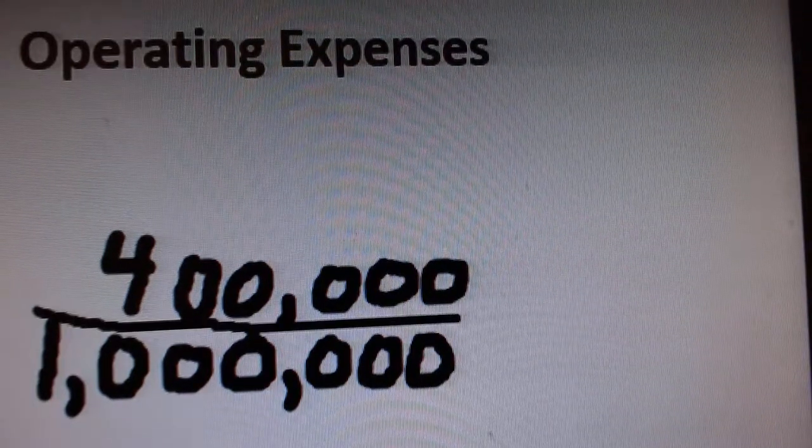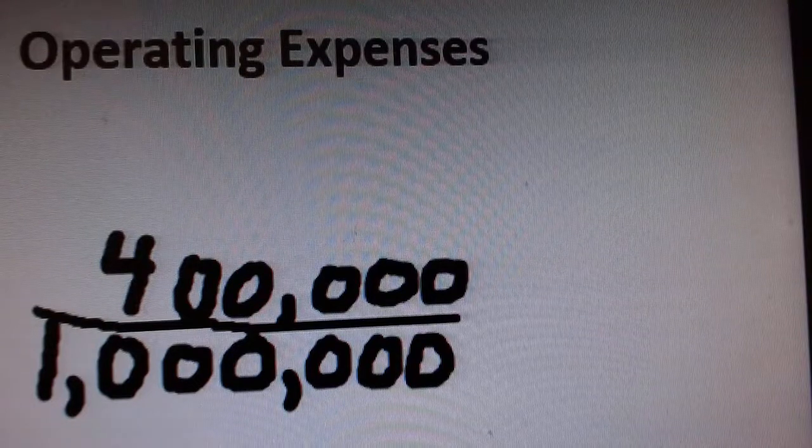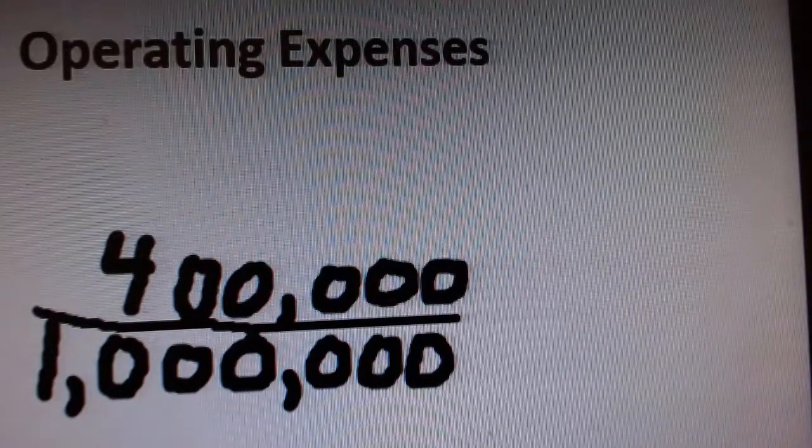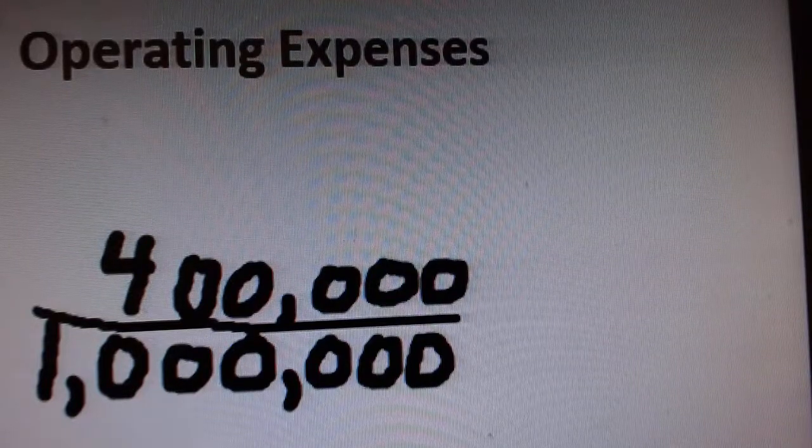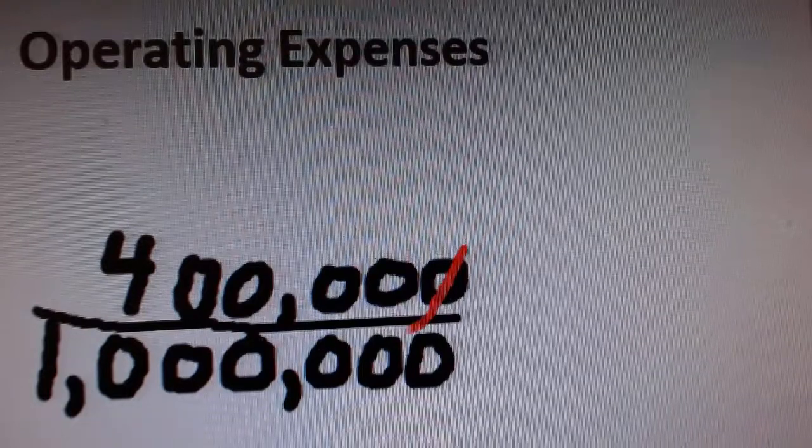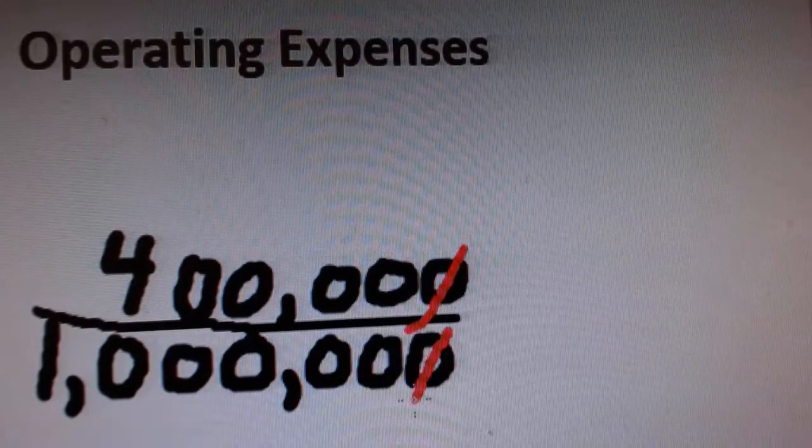We'll make this as a fraction, put $400,000 over $1,000,000. Now with fractions, we can eliminate zeros. So when there's a zero on top, and this is to the left of the whole number, I can mark out the one on bottom as well.